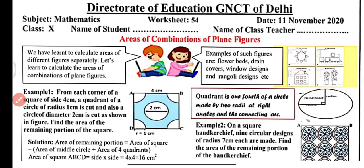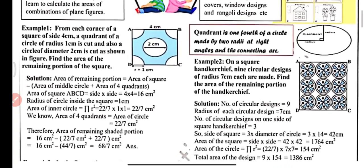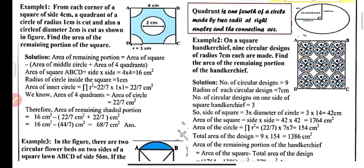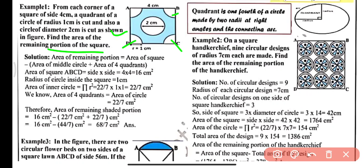Example number 1: From each corner of a square of side 4 cm, a quadrant of a circle of radius 1 cm is cut, and also a circle of diameter 2 cm is cut from the center as shown in the figure. Find the area of the remaining portion of the square. We have a square of side 4 cm; quadrants of radius 1 cm are cut from each corner, and a circle of diameter 2 cm is cut from the center.